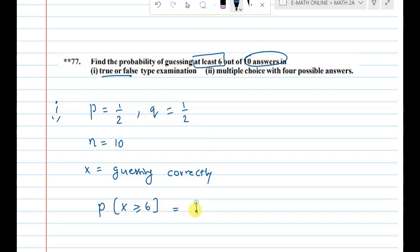First, what are the possibilities? Either 6, or 7, or 8 questions answered correctly, or 9 questions correctly, or 10 questions correctly.